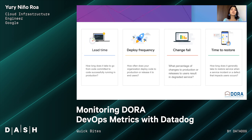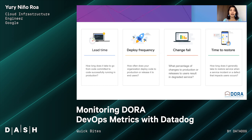Deployment frequency metric corresponds to the number of deployments to production. This is important as it highlights how often you can deploy to production, which in turn indicates there is a mature automated testing and a mature CI/CD pipeline to release to production. The change failure rate can be explained by answering: after a production deployment, was it successful, or was a fix or rollback required? And finally, the mean time to restore, or MTTR, is about how quickly restoration of production occurs in an outage or degradation — how quickly can the system auto-heal itself or scale to handle increased load.